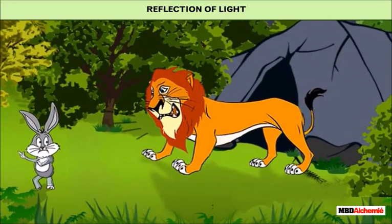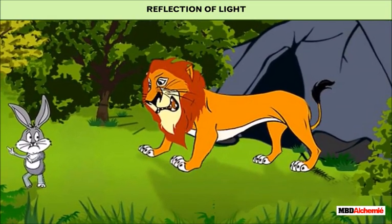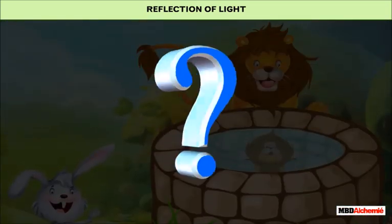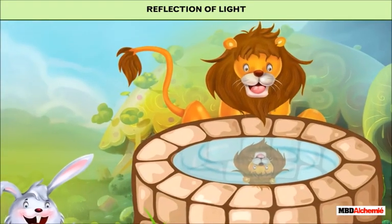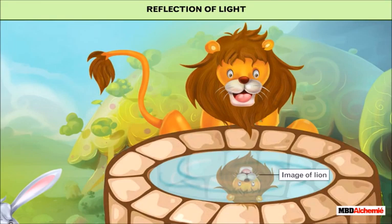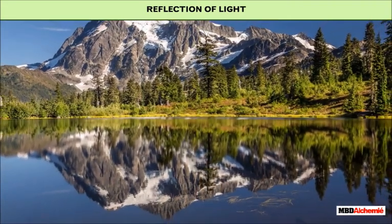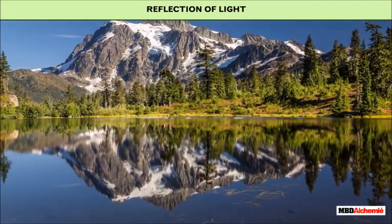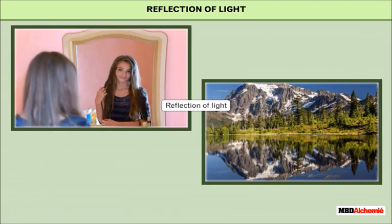Reflection of Light. We all have heard the Panch Tantra story of the lion and the rabbit. What do you think the lion saw in the water? There was no other lion in the water. The lion saw its own image in water formed due to reflection of light. You see yourself in a mirror. You can see the images of nearby mountains and trees in a lake. This is due to reflection of light.